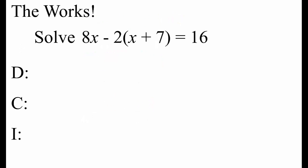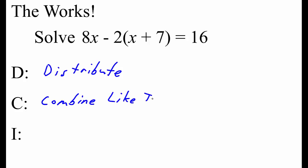When solving a multi-step equation, you can use DCI to make sure you're undoing in the correct order. First, we get rid of parentheses by distributing. Then we combine like terms on the same side of the equal sign. Then we use our inverse operations.